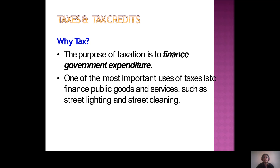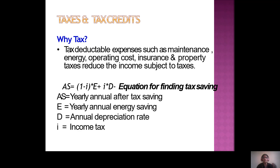Tax deduction expenses such as maintenance, energy, operating cost, insurance, and property tax reduce the income subject to tax. The equation for finding tax saving is: AS = (1 − i) × E + i × D, where AS is yearly annual after-tax saving, E is yearly annual energy saving, D is annual depreciation rate, and i is income tax rate.